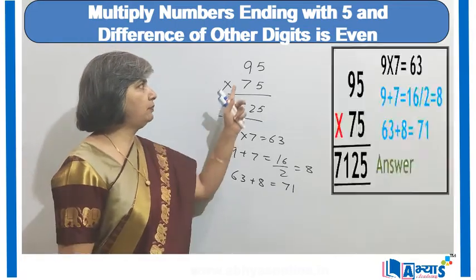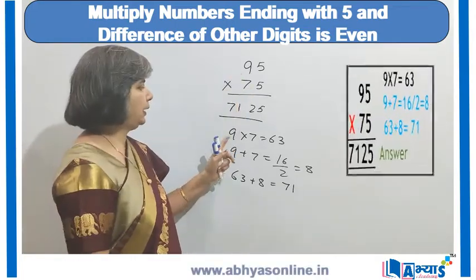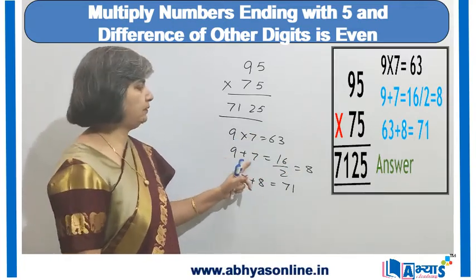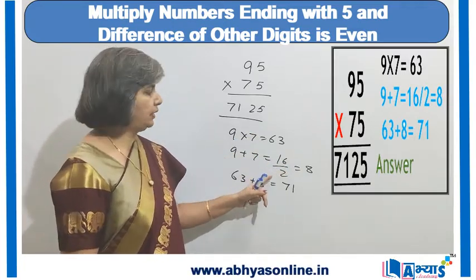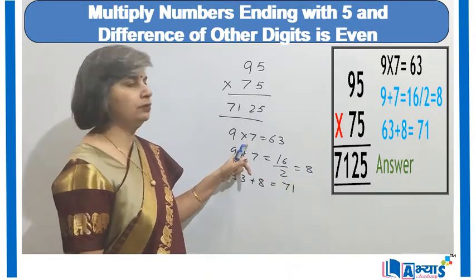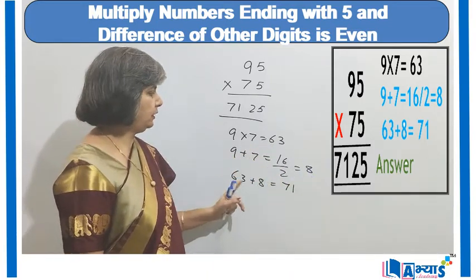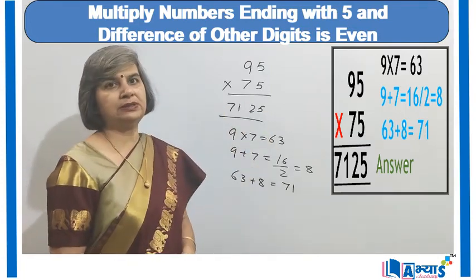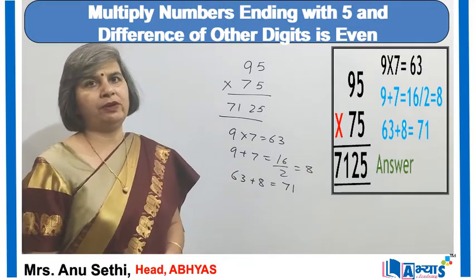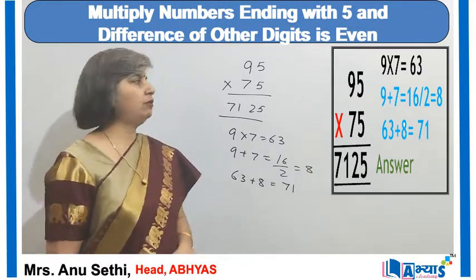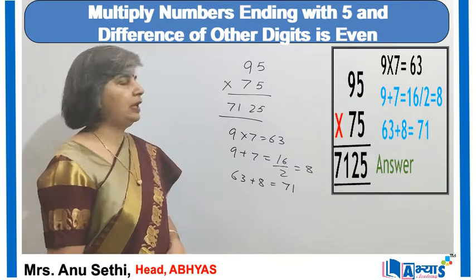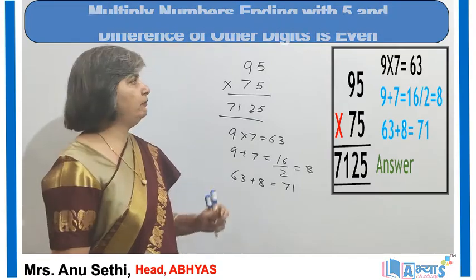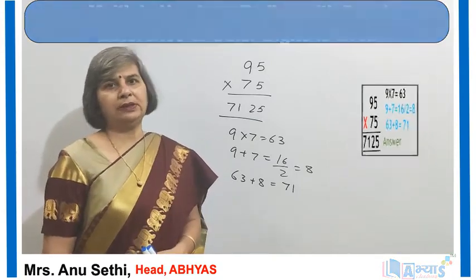For the remaining digits, multiply 9 × 7 = 63, then add 9 and 7 to get 16, divide by 2 to get 8, and add 8 to 63 to get 71. Prefix 71 in the answer, giving 7125. This fast multiplication method helps solve questions in much less time compared to the longer conventional method.